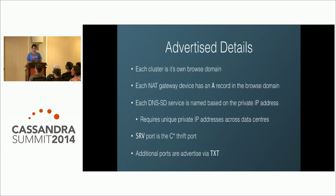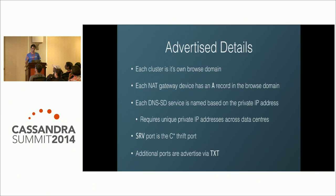In DNS SD, each cluster gets its own browse domain — a collection of records identifying each node. For every data center we deploy a NAT gateway whose public address is advertised as an A record in that browse domain. Each node's service entry is an SRV record named based on its private IP address — this allows mapping from a private IP seen in gossip to a DNS service record. Route 53 doesn't support dots in record names so we replace dots with dashes. The SRV record's hostname points to the gateway A record; the Thrift port is in the SRV port field, and the CQL port is in the associated TXT record as a key-value pair.